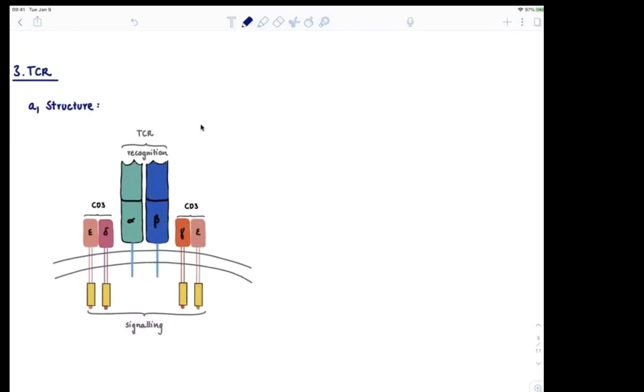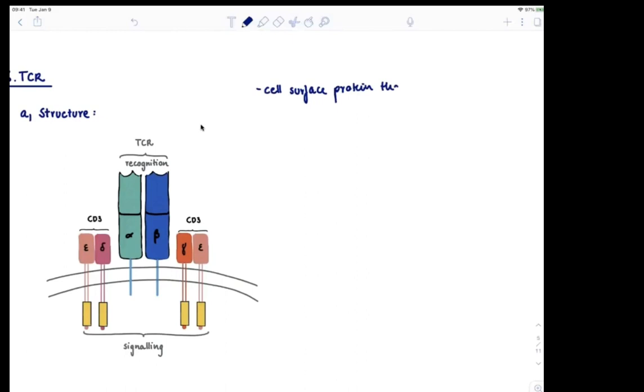The TCR is a cell surface protein that consists of an alpha and a beta chain. There are some similarities in gene structure with the heavy and light chain of the B-cell receptor.